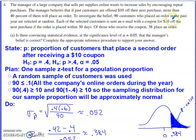To investigate the belief, 90 customers who placed an order in the past year are selected at random. Each selected customer is sent an email with a coupon for $10 off the next purchase if the order is placed within 30 days. Of those who receive the coupon, 38 place an order.